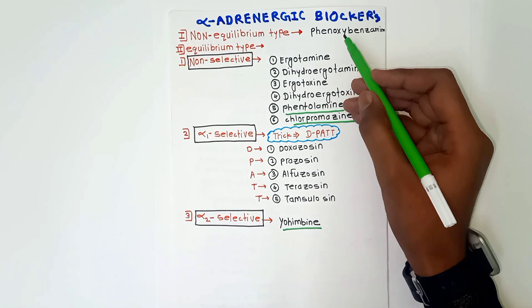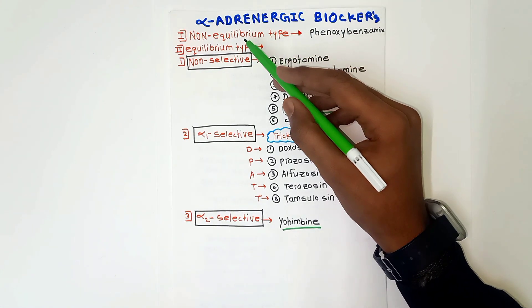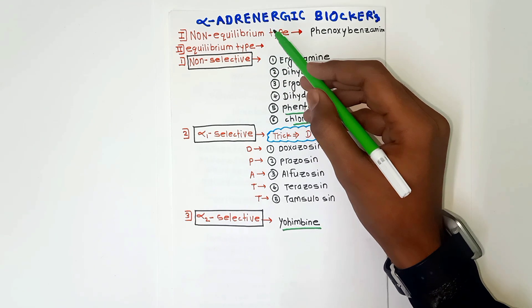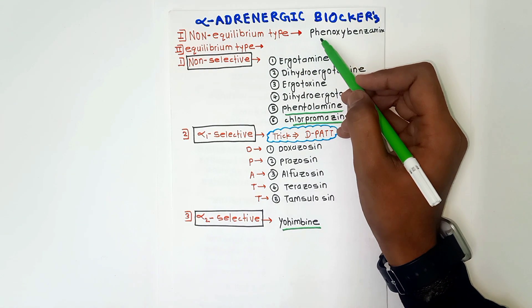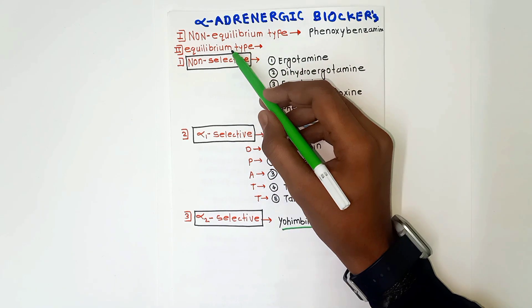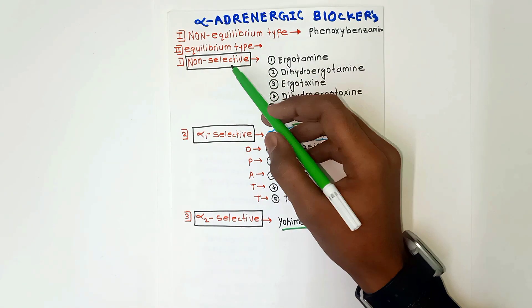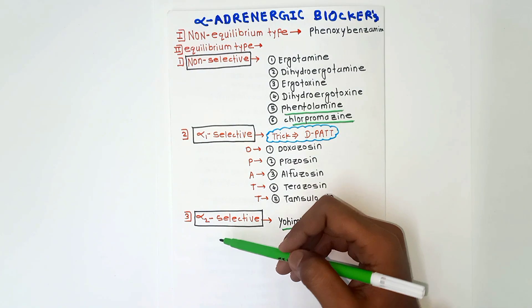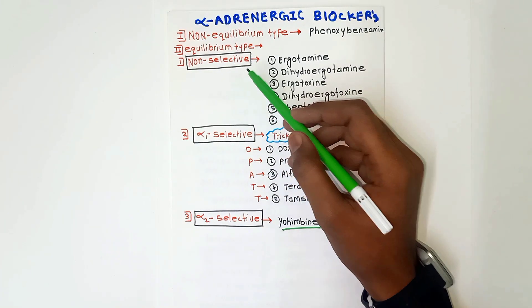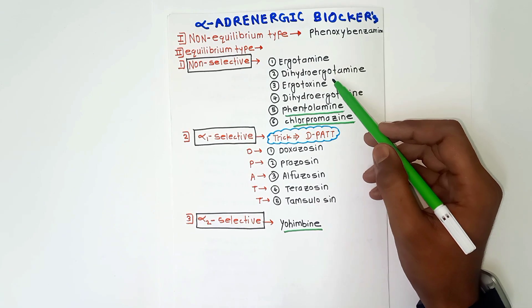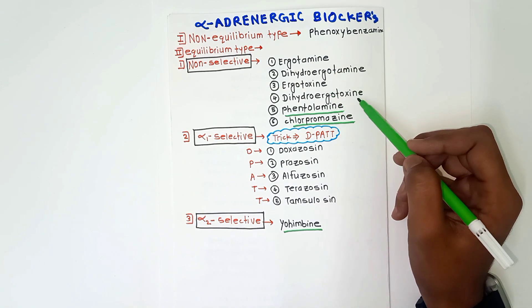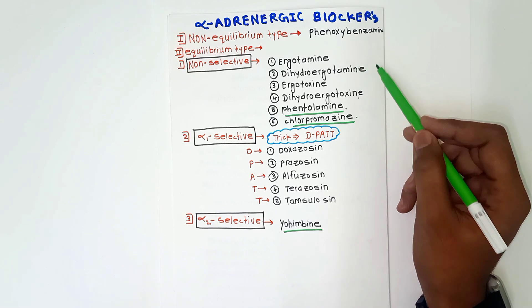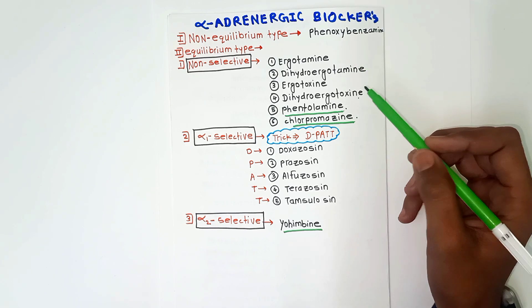Now we will learn the classification of alpha blockers. Alpha blockers are divided into two main groups: non-equilibrium type and equilibrium type. The non-equilibrium type has only one drug — phenoxybenzamine. The equilibrium type has three subtypes: non-selective, alpha-1 selective, and alpha-2 selective. Non-selective drugs are ergotamine, dihydroergotamine, ergotoxin, dihydroergotoxin, phentolamine, and chlorpromazine.